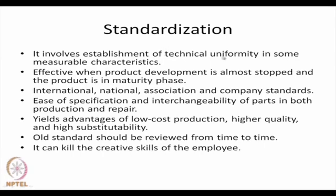Once fewer products are produced in mass, we can go for standardization. Standardization involves establishment of technical uniformity. It is usually possible in the maturity phase when developments have more or less stopped. There are different types: company standards, association standards, national standards and international standards. Because of standardization there is ease in specification and interchangeability of parts, resulting in reduced production cost and reduced repair cost. It yields advantages of low cost production, higher quality and high substitutability. However, old standards should always be reviewed and new standards set separately — standardization can also kill the creative skills of employees.